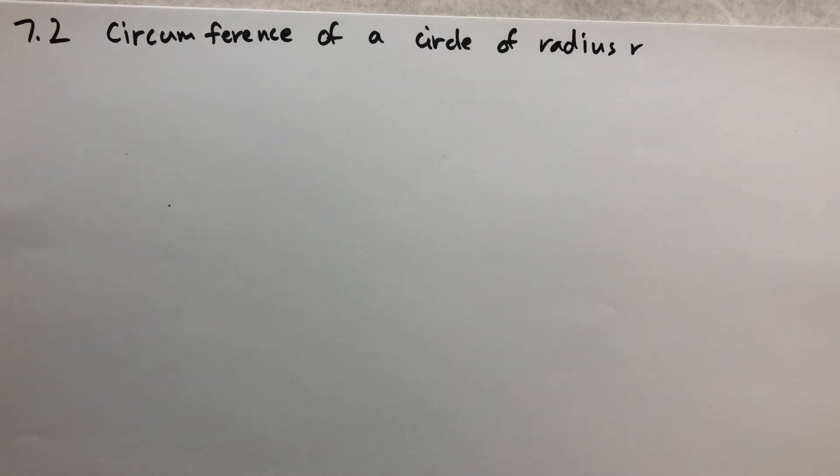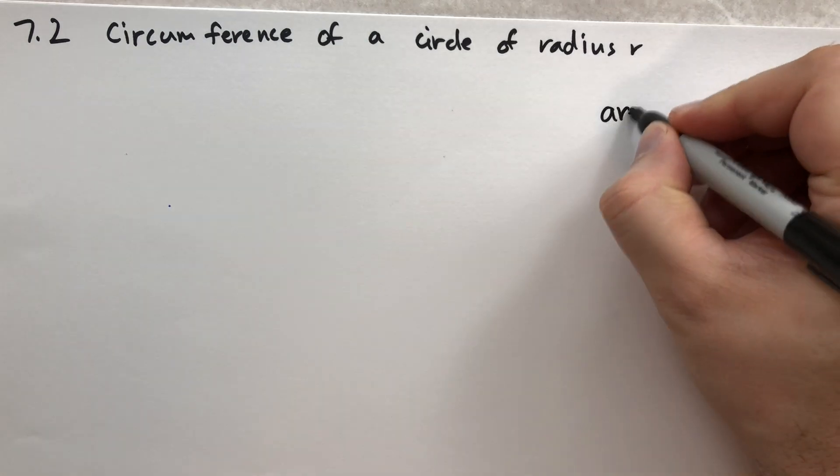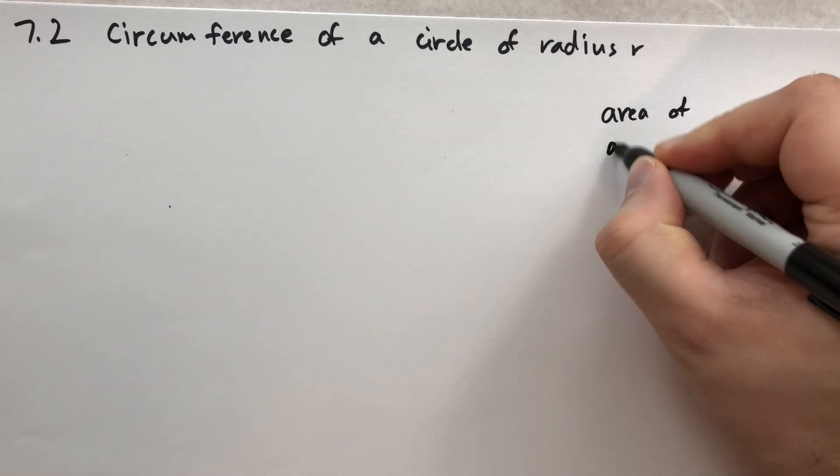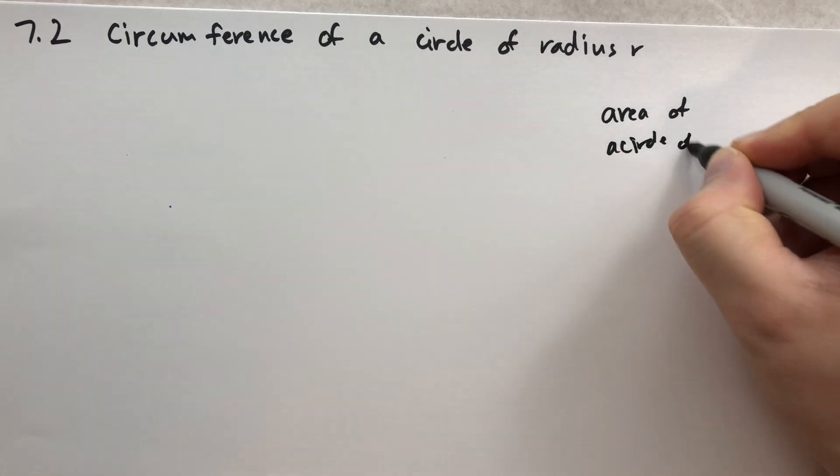This section is a little bit different from all the others. We're going to actually do a little bit of calculus, limits in particular. But we're going to try to find the circumference of a circle of radius r. We've already assumed, or we've kind of proven in the last section,